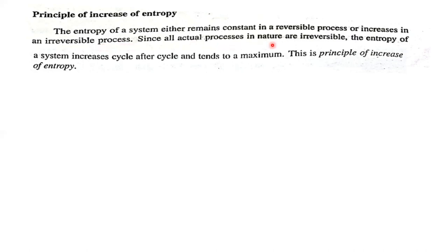The entropy of a system either remains constant in a reversible process or increases in an irreversible process. Since all actual processes in nature are irreversible, the entropy of a system increases cycle after cycle and tends to a maximum. This is the principle of increase of entropy. If it is a reversible process, entropy remains constant. If it is an irreversible process, the entropy increases.